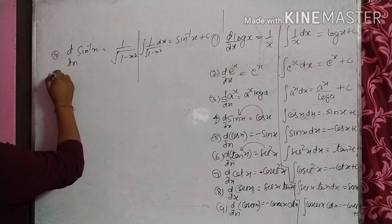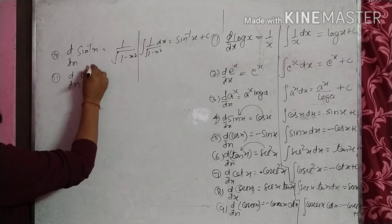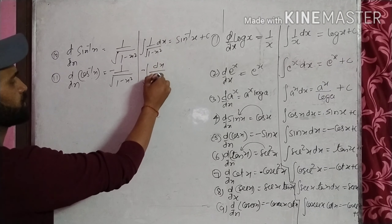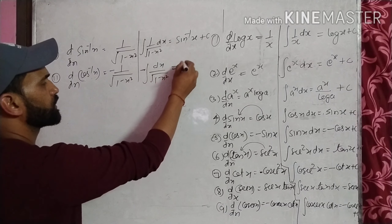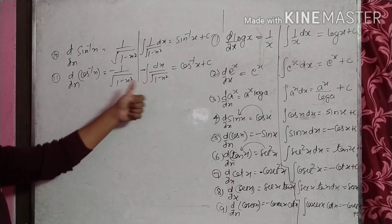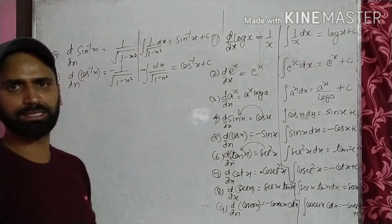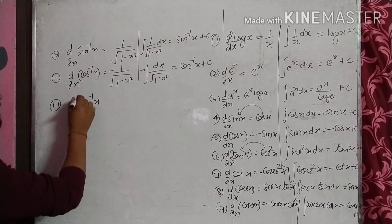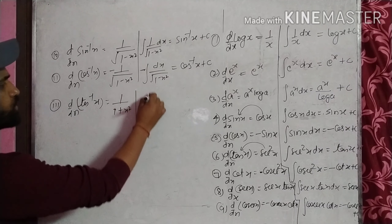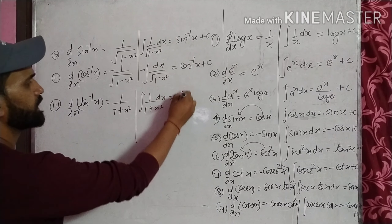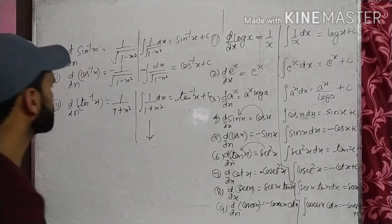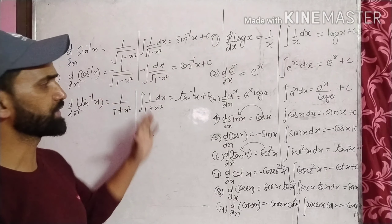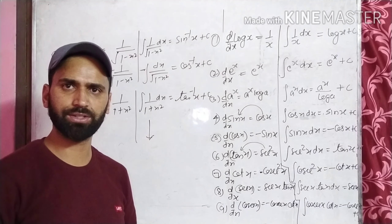11th: d/dx of cos inverse x is minus one upon √(1 - x²), so integration of minus one upon √(1 - x²) will be cos inverse x plus c, which can also be written as minus sin inverse x. Similarly, differentiation of tan inverse x is one upon one plus x square, so integration of 1/(1 + x²) will be tan inverse x plus c. इसी तरह cot inverse, secant inverse और cosecant inverse का differentiation निकाल सकते हैं, और उस differentiation का integration वापस वही function आता है।